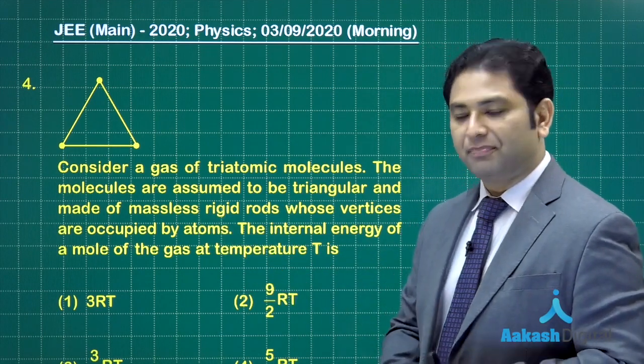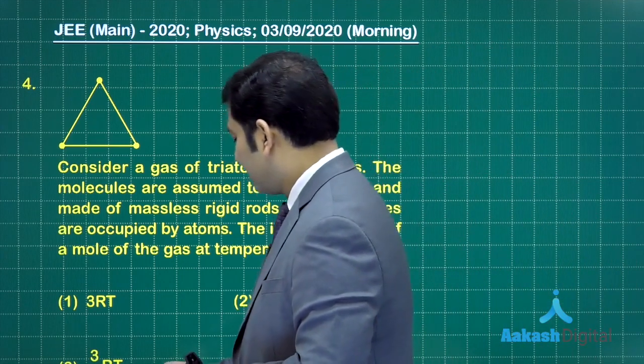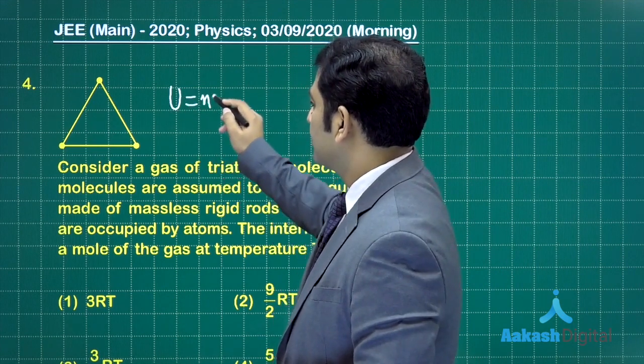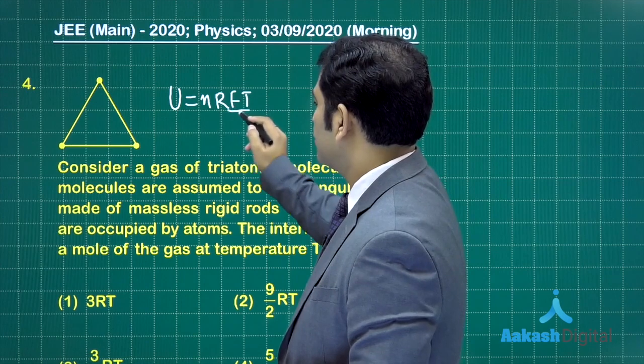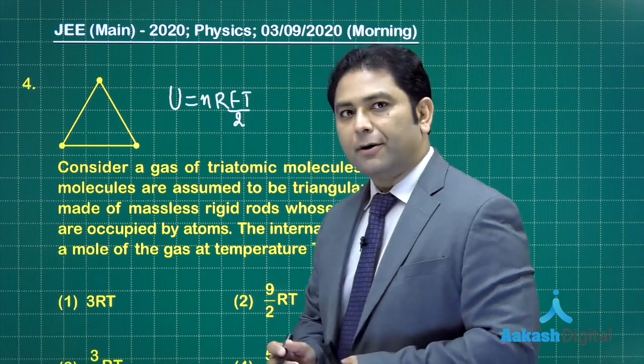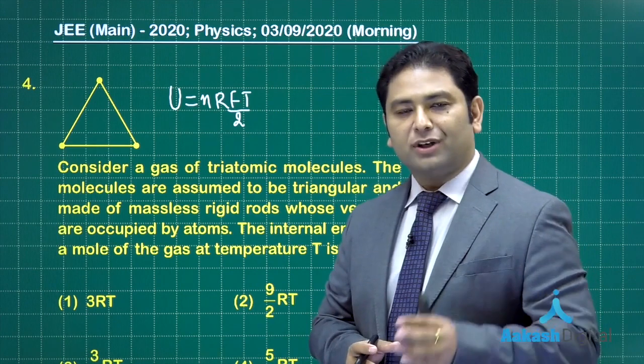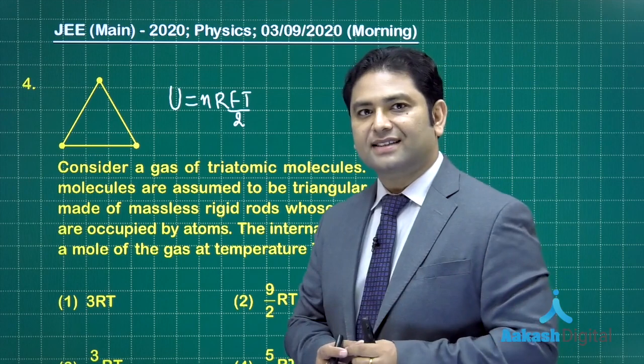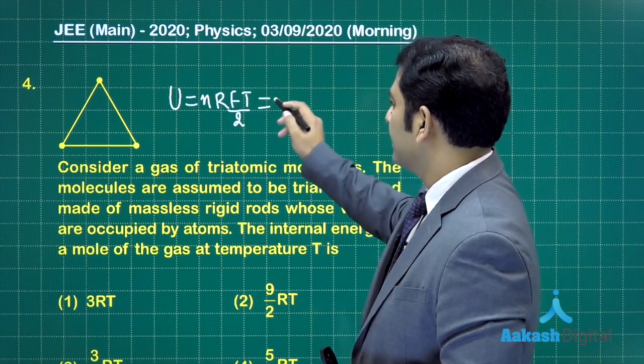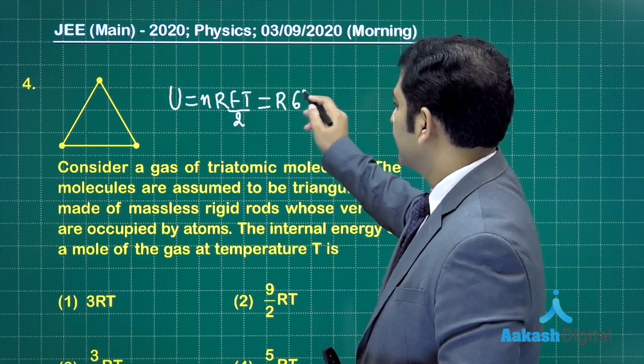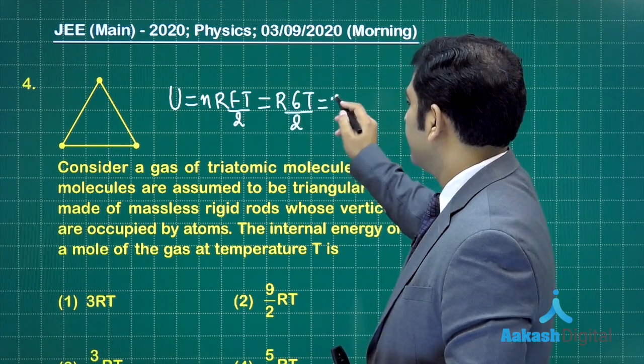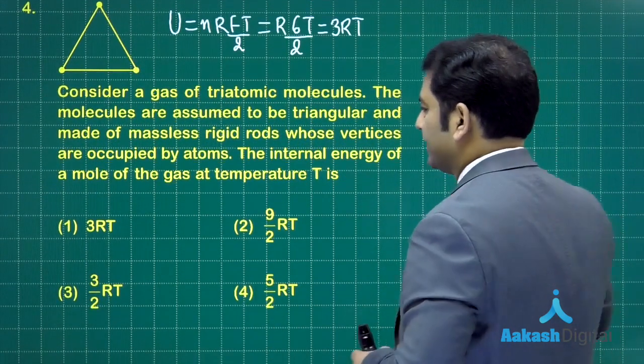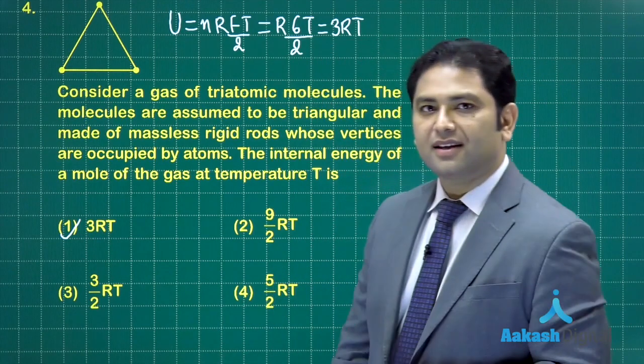So related to the law of equipartition, the internal energy U is going to be nRFT by 2. Now it's triatomic, so the degree of freedom will be 3 for translation, 3 for rotation, so total that's going to be 6. The number of moles is 1, so that's R6T by 2, which will give me 3RT. That's the internal energy, so option number 1.